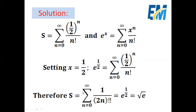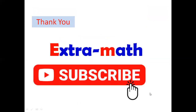Therefore, the summation from n equals 0 to infinity of 1 over double factorial of 2n equals e to the power one-half, which is the square root of e. Thank you for watching.